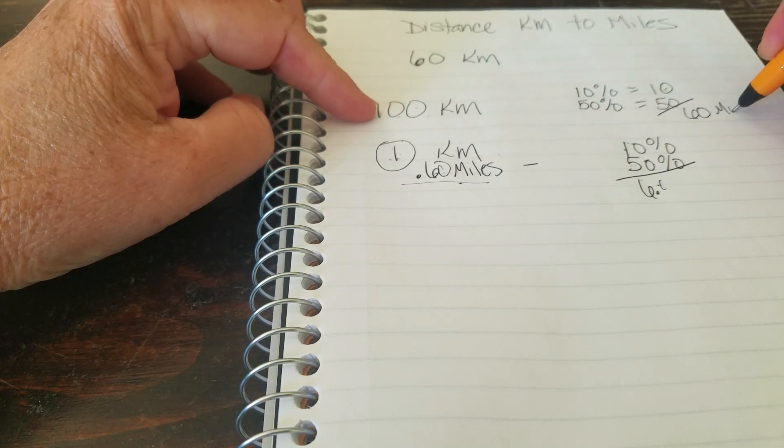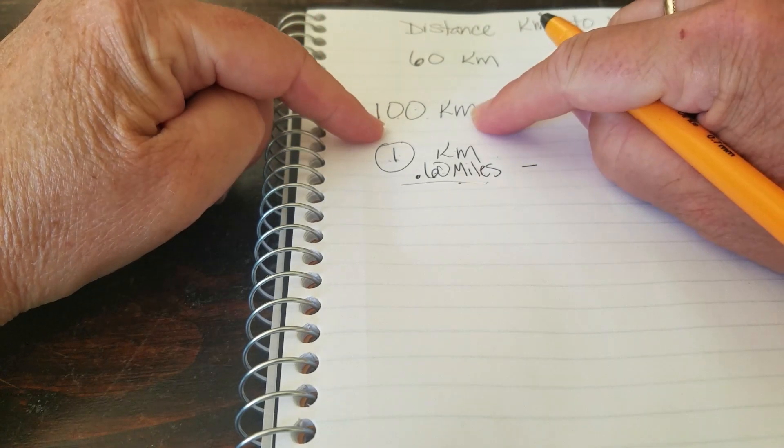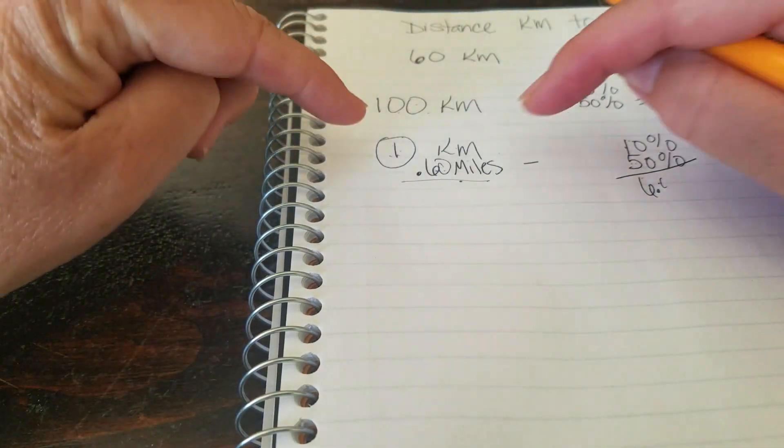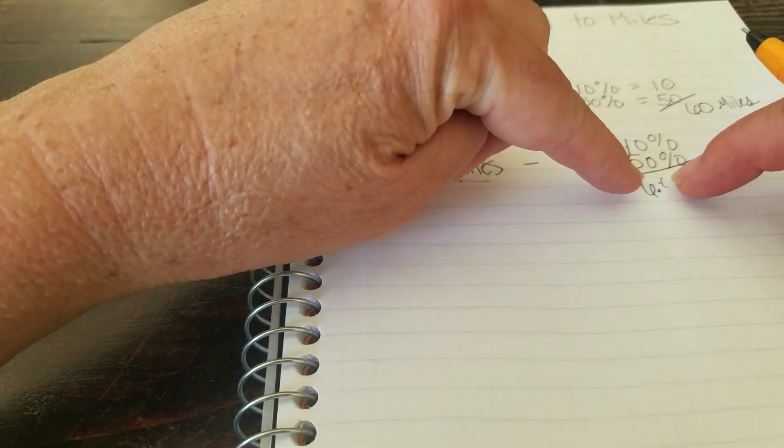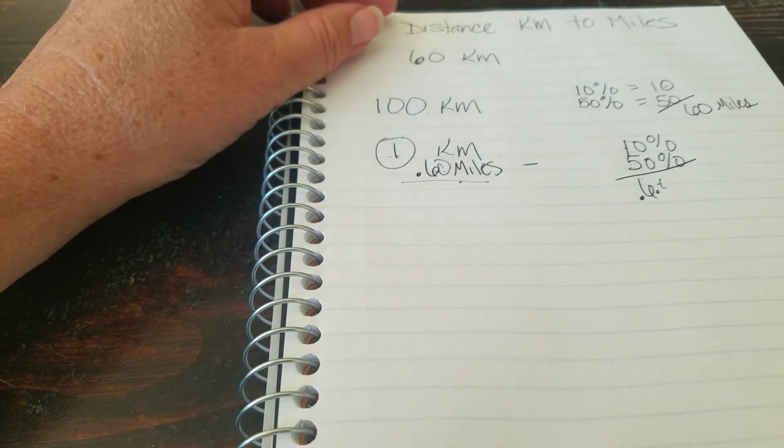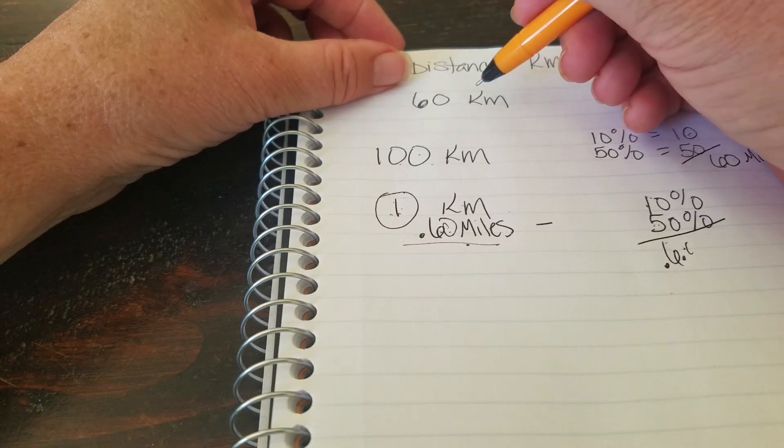50 plus 10 is 60 miles. So 100 kilometers is 60 miles. 1 kilometer is 0.6 miles. Let's do that again.